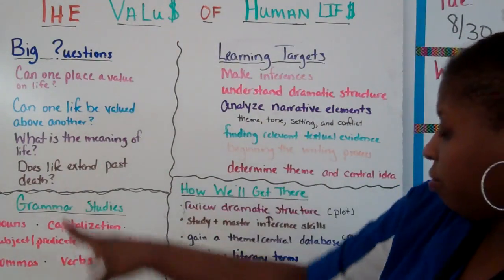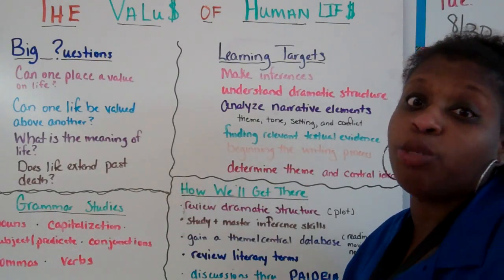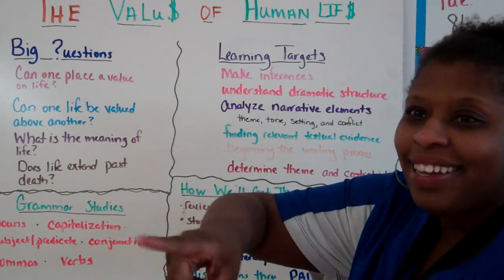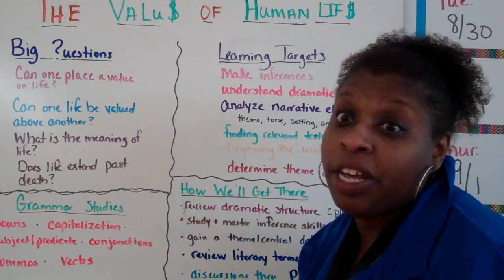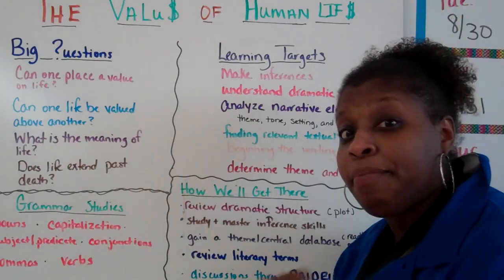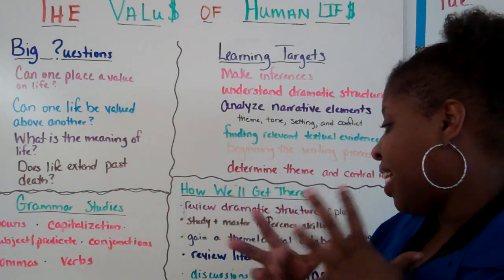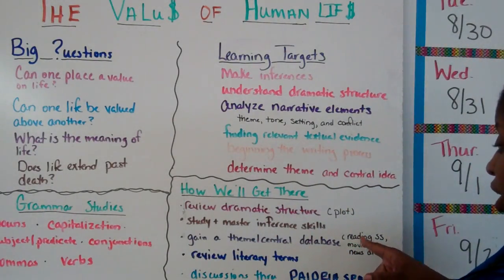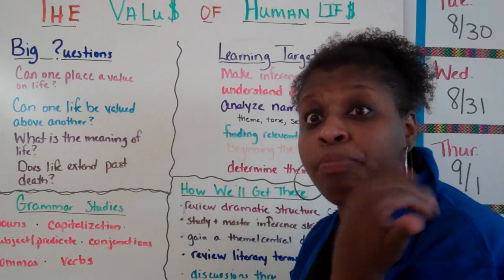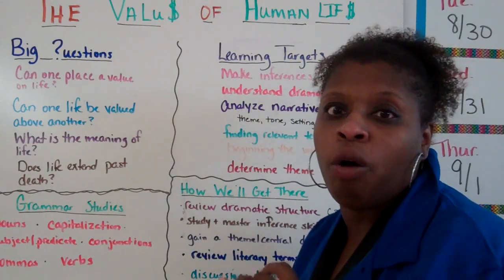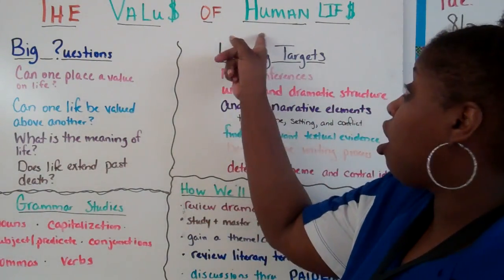So how are we going to get there? First, we're going to review dramatic structure, which is plot — exposition, rising action, the climax, falling action, and the resolution. We're going to study and master inference skills, starting at the bottom and working our way to the top. We're going to build a theme central database. We'll be reading short stories, watching movies and news articles, and we're going to realize that themes are archetypal in nature, meaning they're repetitive. We'll look at a song, a short story, or a poem that all share the same theme of valuing human life.